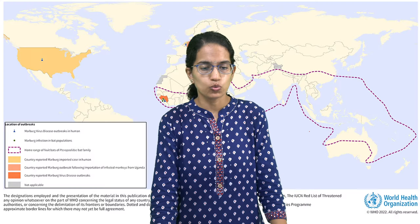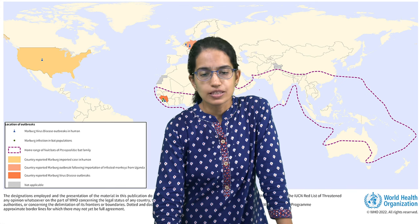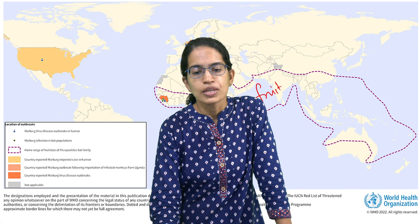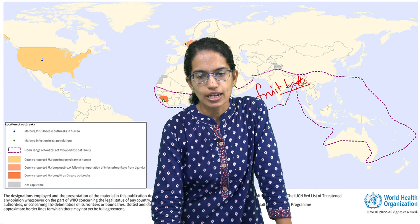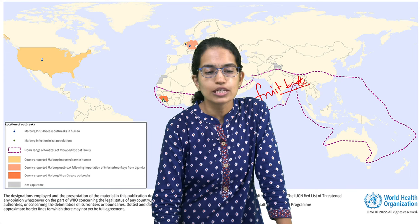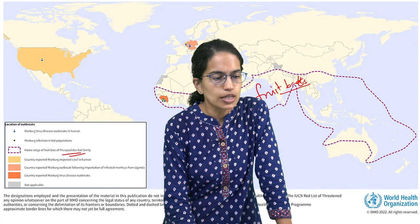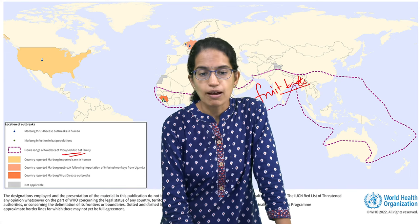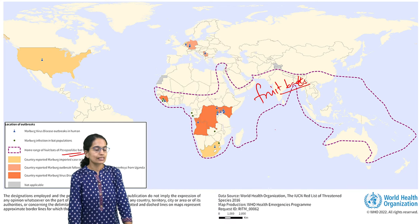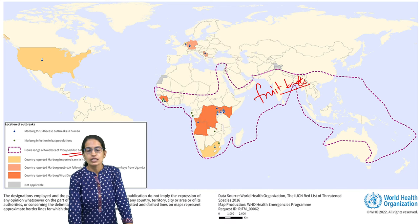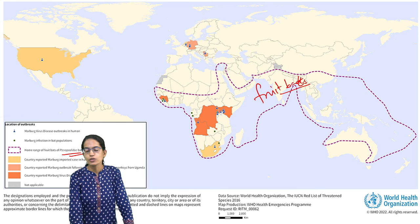This virus has been spread through the fruit bat. The area marked by the dotted lines shows the extension of the fruit bats that belong to the teripode family, and it is believed that these fruit bats can have a significant impact on the extension of the virus.